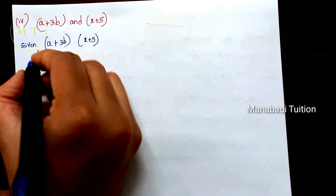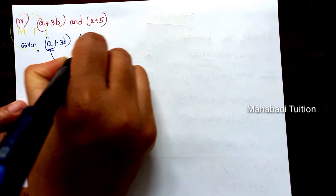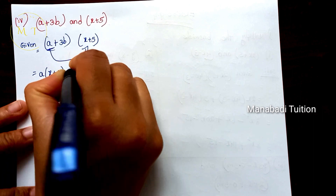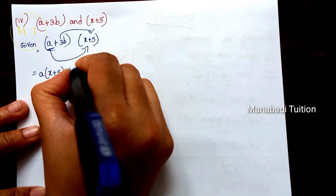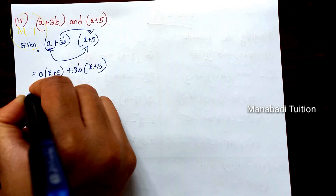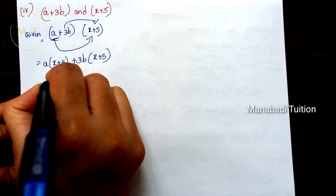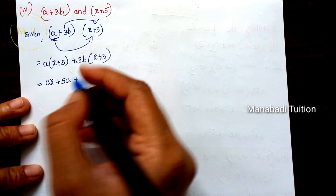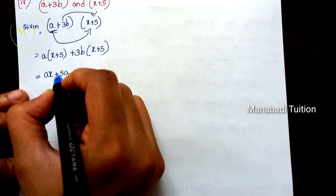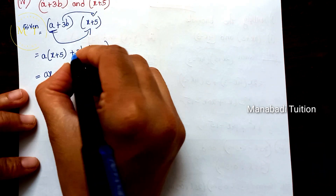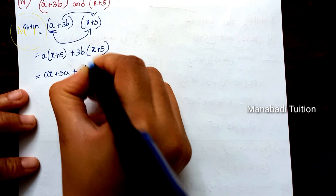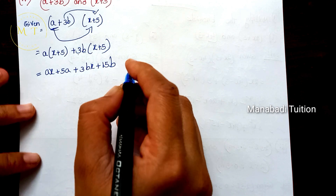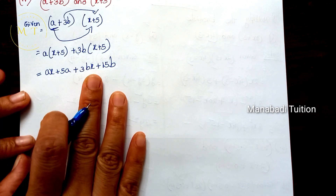Fourth one: (a plus 3b) and (x plus 5). Multiply the first term of the first expression by the second expression: a into (x plus 5) gives ax plus 5a. Then multiply the second term: 3b into (x plus 5) gives 3bx plus 15b. So the total answer is ax plus 5a plus 3bx plus 15b.